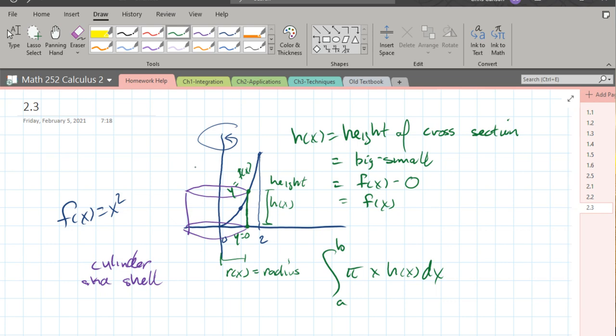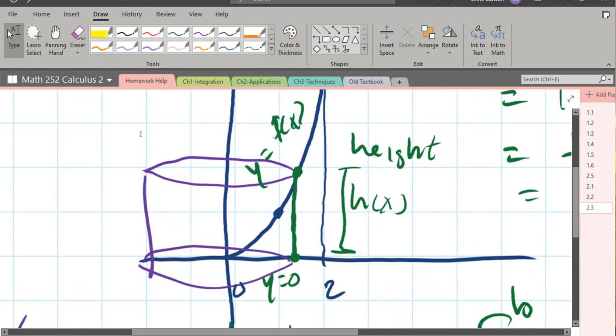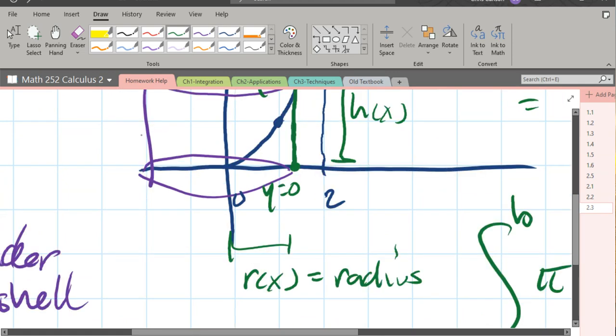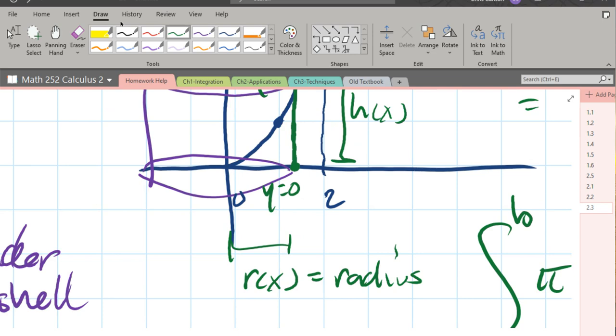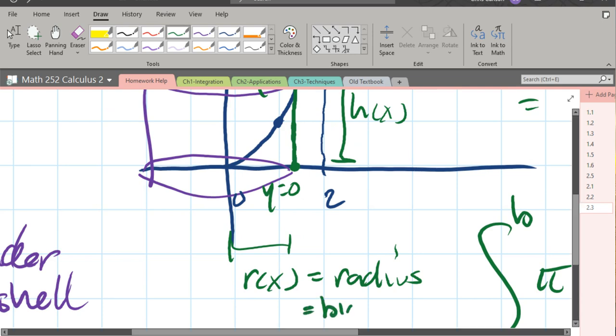Good news is, your radius, if you look very closely, is your radius really changing? No, for this cross section, you're always the same distance away from your rotation axis. So, how do we measure the radius? We don't need to think too hard. It's always going to be big minus small.